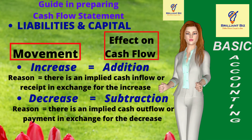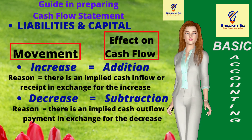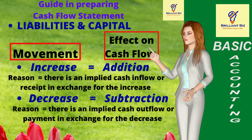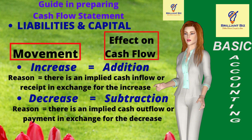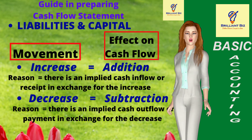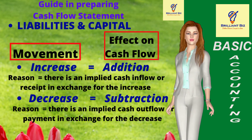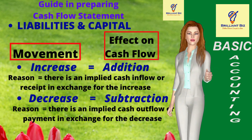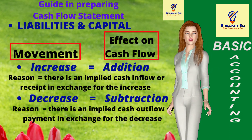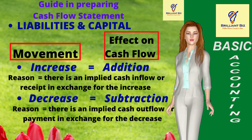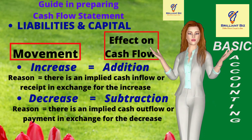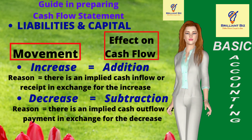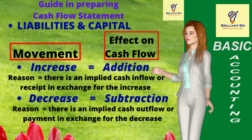Whereas, an increase or decrease in liabilities and capital accounts in the balance sheet has a direct effect on the cash flow statement. An increase in liabilities and capital must be added or taken up as a cash inflow, while a decrease must be subtracted or taken up as a cash outflow. The assumption is that when liabilities or capital accounts are increased, there is a receipt of cash; while a decrease assumes that cash payment was made, hence taken up as a cash outflow.